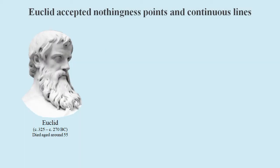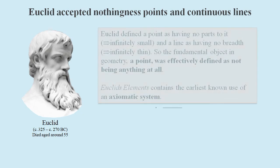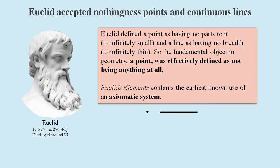The basis of mathematics was firmly established by Euclid in his publication called Euclid's Elements. And even though Euclid didn't like infinity, he still defined a point in terms that meant it was infinitely small and he defined a line in a way that meant it was infinitely thin.